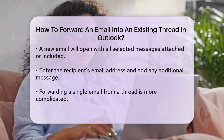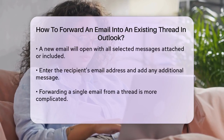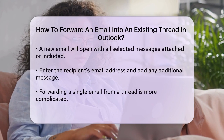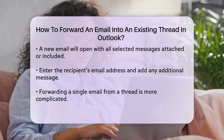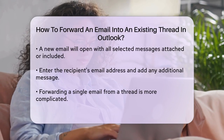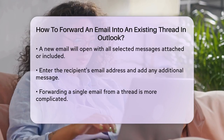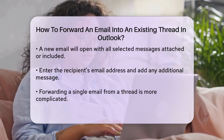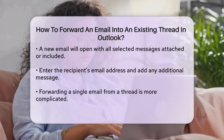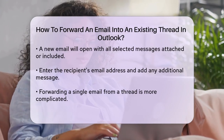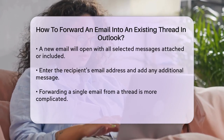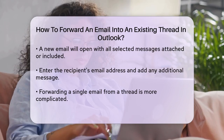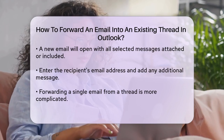However, if you only want to forward a single email from the thread, things get a bit tricky. Unfortunately, Outlook is designed to include the entire thread when you forward an email from a conversation. There isn't a straightforward way to forward just one email without the rest of the thread being included.